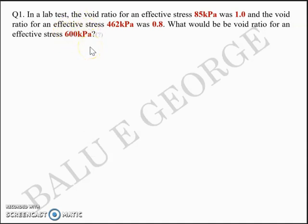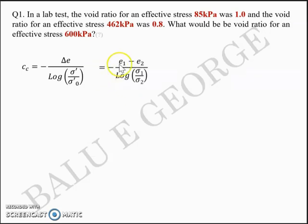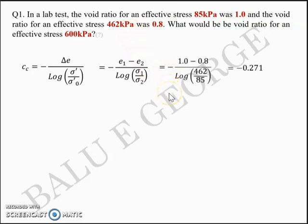We need to think about an equation that connects void ratio and effective stress. We have the compression index CC equal to ΔE divided by log(σ'/σ₀'), that is, change in void ratio over the logarithm of change in effective stress. Here, void ratio changes from 1 to 0.8 when stress changes from 85 to 462. Substituting, you get CC as 0.271.